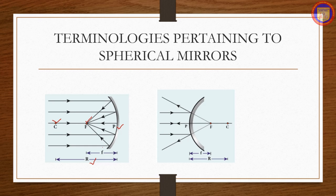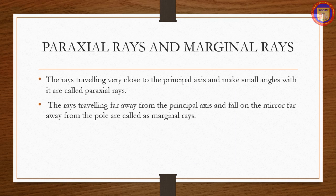Focal length is the distance between the pole and the focus. The focal plane is the plane through the focus and perpendicular to the principal axis. Paraxial rays are rays traveling very close to the principal axis and making small angles with it. Marginal rays are rays traveling far away from the principal axis and falling on the mirror far from the pole.